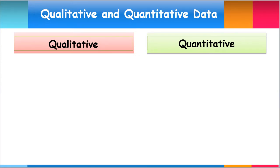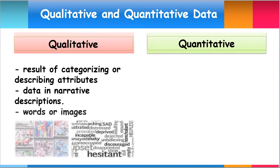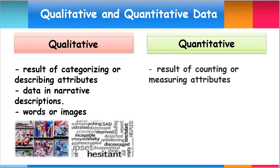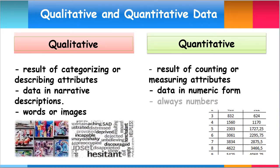Qualitative research data are the result of categorizing or describing attributes of a population. The data information is in narrative descriptions. Qualitative data are generally described by words or images. Quantitative research data are the result of counting or measuring attributes of a population. The data information is in numeric forms, always in numbers which can either be counted or compared on a numeric scale.